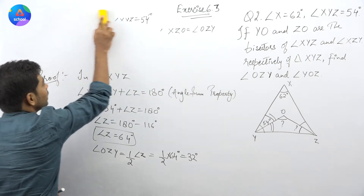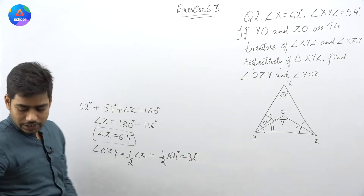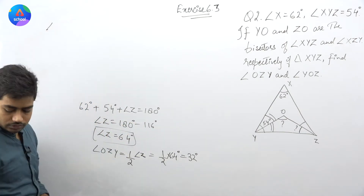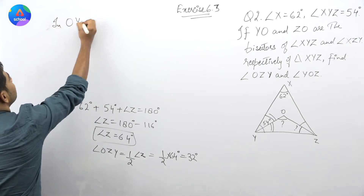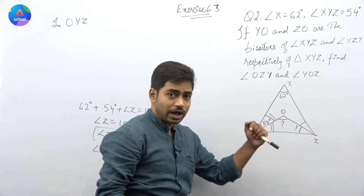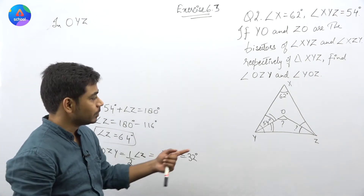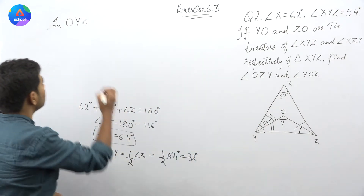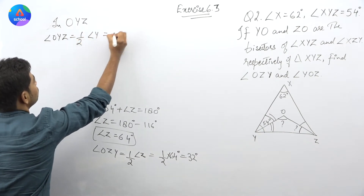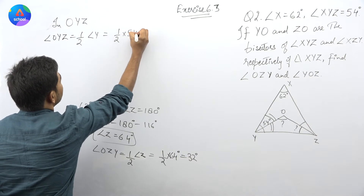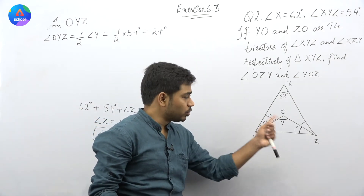Erase कर देते हैं ऊपर का part। चलिए आगे बढ़ते हैं — in triangle OYZ। In triangle OYZ में, angle OZY मैं निकाल चुका हूं: 32 degree। Angle OYZ की बात करूं — यह होगा half of angle Y, जो की हो जाएगा half of 54 degree, जिसकी value आ जाएगी 27 degree।